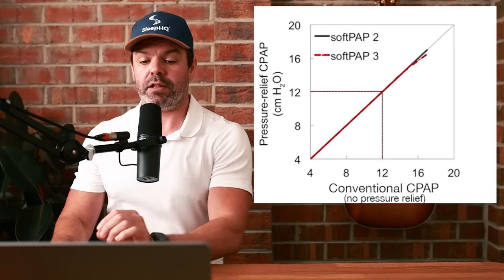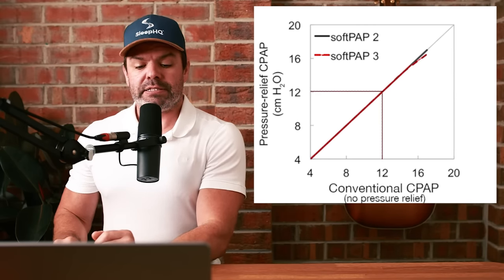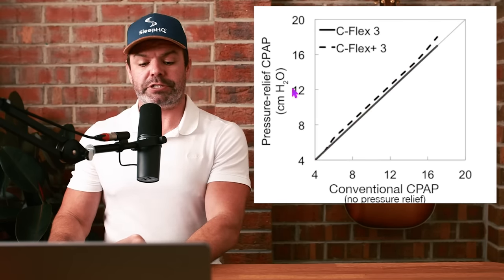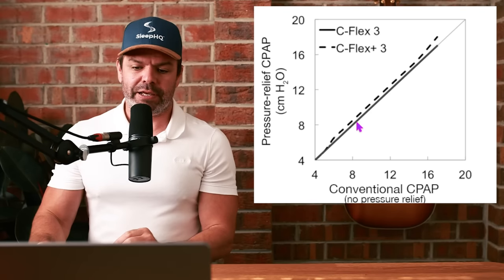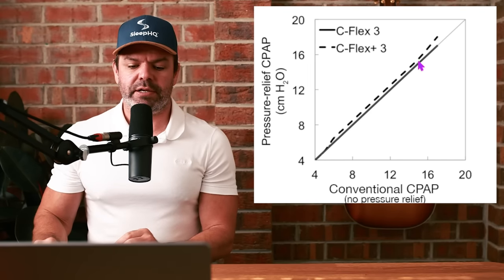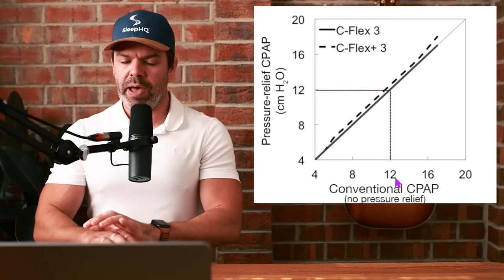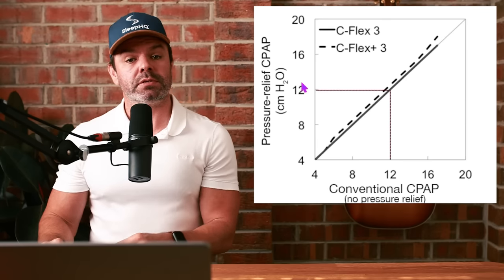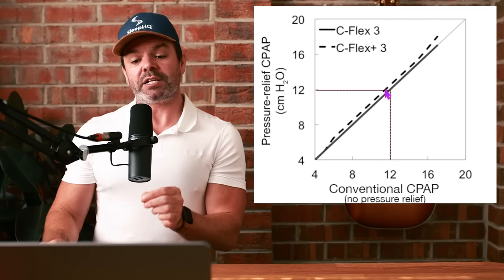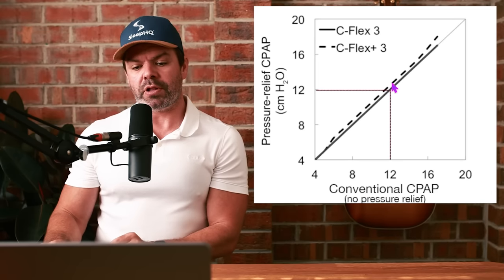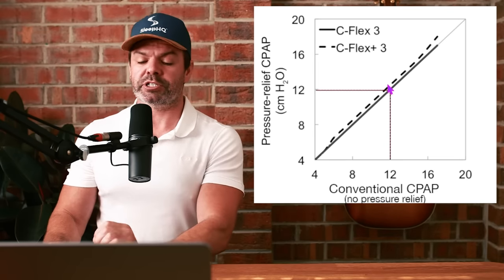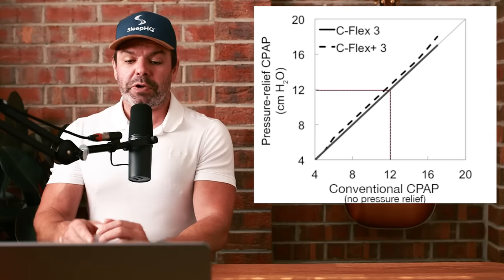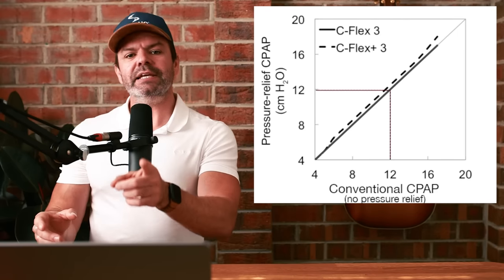Let's also look at the Philips Respironics and their C-Flex pressure relief. Once again, same chart, lines very close together. You can see 12 centimeters with conventional CPAP no pressure relief is pretty much lining up with 12 centimeters with C-Flex on three. With C-Flex Plus on three, you can see the dotted line here, you need just a little bit extra pressure when you add that pressure relief, but very, very good.